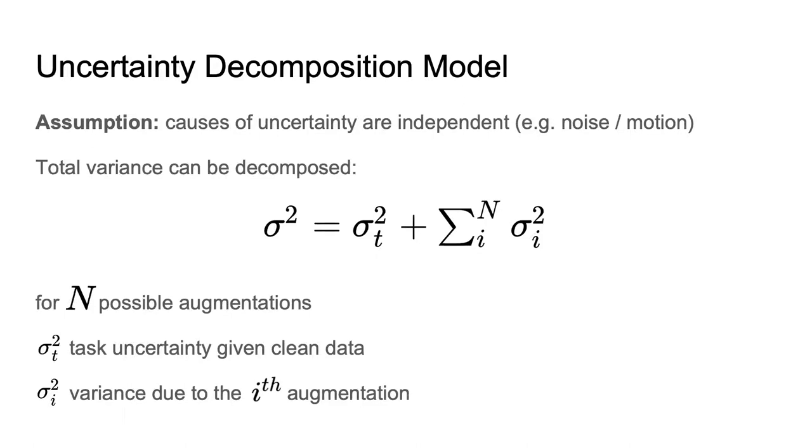Specifically, we decompose the total variance into the sum of the task variance sigma t, which is the uncertainty of the task when given clean data, and the augmentation variances sigma i for n possible artifact augmentations. Note that this is not strictly true because interactions with task uncertainty and between degradation types exist, but modeling this would require the learning of additional covariance terms and would greatly complexify both the model and the training procedure. However, this is an important assumption of our model to make the problem tractable.